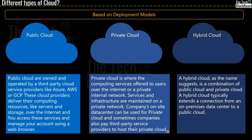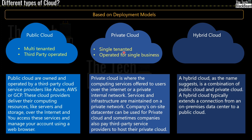Moving on, we have hybrid cloud. As the name suggests, hybrid cloud is a combination of public and private cloud. A hybrid cloud typically extends a connection from an on-premises data center to a public cloud. To add a few more points: public cloud is multi-tenanted, which means a single software instance is shared amongst various users and groups, and it is third-party operated like Azure, AWS, and GCP. Private cloud is single-tenanted and operated for a single business. And finally, hybrid cloud is the best of both worlds — a combination of both public and private cloud.